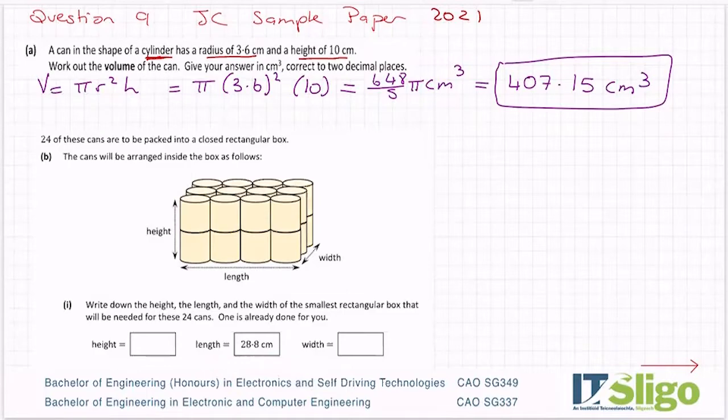The height is an easy enough one. So one of them is 10, so two on top of each other is going to be 20 centimeters. Now the length. So I have one, two, three, four cans across. Now, if you think about a circle, can you see that the widest part of a circle is right across the center? And that would be the diameter.